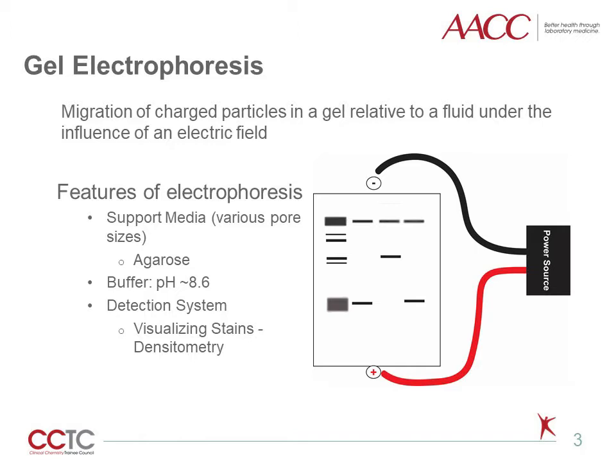Gel electrophoresis is one of the most common electrophoresis techniques, performed by applying a sample to a gel support and separating proteins through the combination of buffer and electric field that causes a flow of ions between the nodes. It consists of a support media such as agarose, cellulose acetate, or polyacrylamide gels with various pore sizes. Agarose gel is the common support media used in clinical laboratories. Electrophoresis is carried out in a buffer at pH 8.6, resulting in most proteins having an overall negative charge. Detection is accomplished through visualization using stains such as Coomassie Brilliant Blue and Amido Black, and the visible bands can be quantified by densitometry.